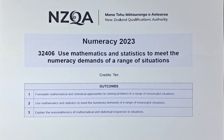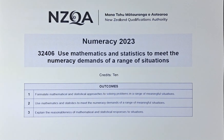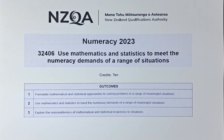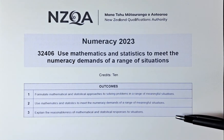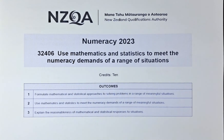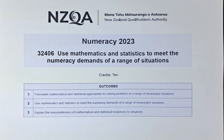Good day. In this video we are going to do unit standard 32406: Use Maths and Stats to Meet the Numeracy Demand of a Range of Situations. This is the exam done in June 2023 — a numeracy paper worth 10 credits. To get these 10 credits you need to achieve three outcomes, so each question covers a different outcome and you need a combination of all outcomes to pass. Without further ado, let's do questions 1G and 1H.